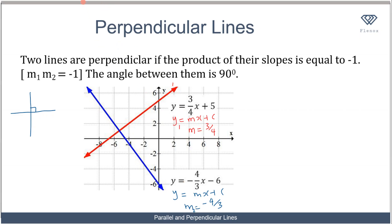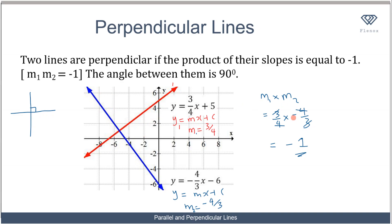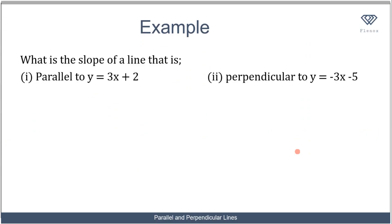Now let's find the product of their slopes: m1 times m2 equals (3/4) times (-4/3). The 3s cancel and the 4s cancel, leaving minus 1. So the product of their slopes is equal to -1. When you have two perpendicular lines, the product of their slopes will always equal -1.